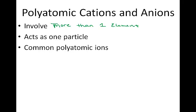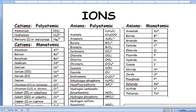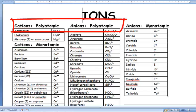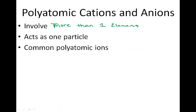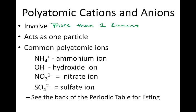For a list of common polyatomic ions, refer to your periodic table where we see here, cations, polyatomic, and this entire table of anions that are polyatomic. Some common polyatomic ions are NH4 positive, which is the ammonium ion, OH negative, which is the hydroxide, NO3 negative one, which is the nitrate, and SO4 negative two, which is the sulfate. See the back of the periodic table for the listings.